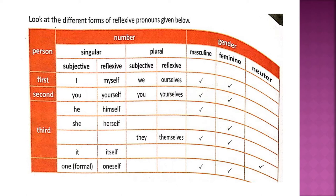Let us look at the examples given in the textbook: Seba managed to save herself. We must boost ourselves during time of crisis. Please help yourself. In these sentences, the pronouns herself, ourselves, and yourself refer to Seba, we, and you respectively.